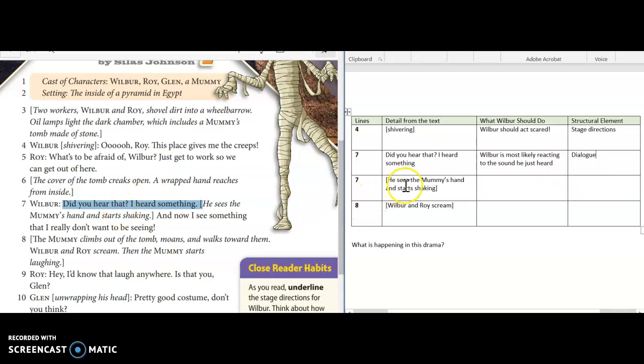Now let's look at line seven: 'he sees the mummy's hand and starts shaking.' That's this detail right here from the drama. So at this moment what should Wilbur probably do? Imagine that you're Wilbur and you're on stage, what should he do? Wilbur should start shaking. And the structural element, this is another example of stage directions telling our actors what to do while they're on stage.